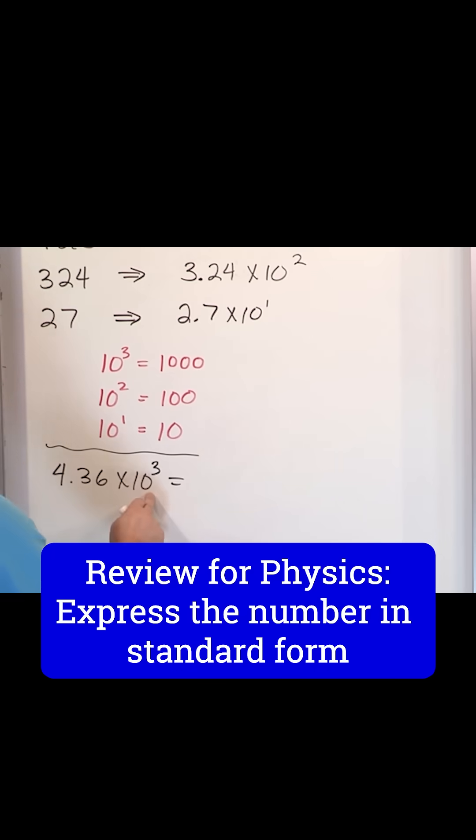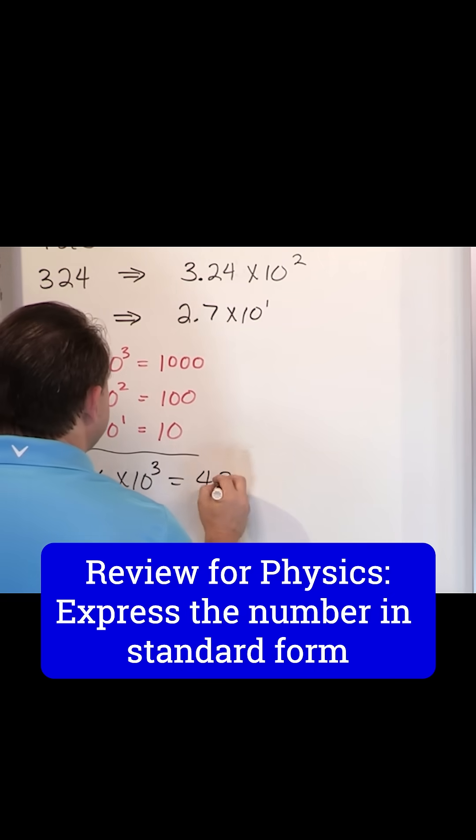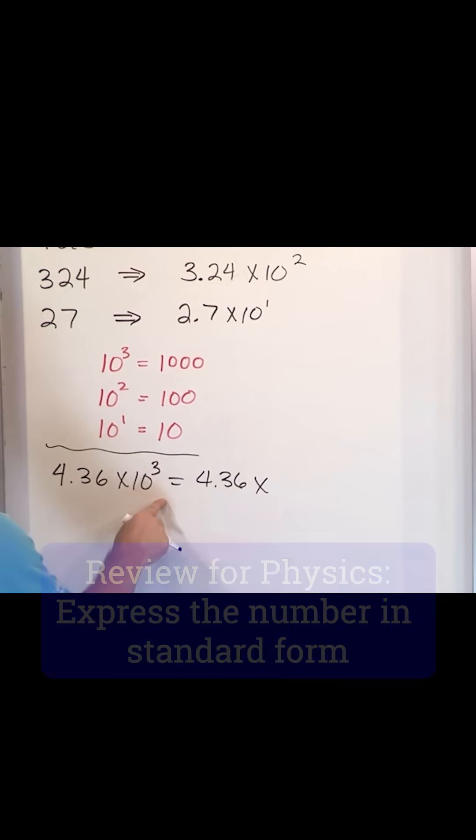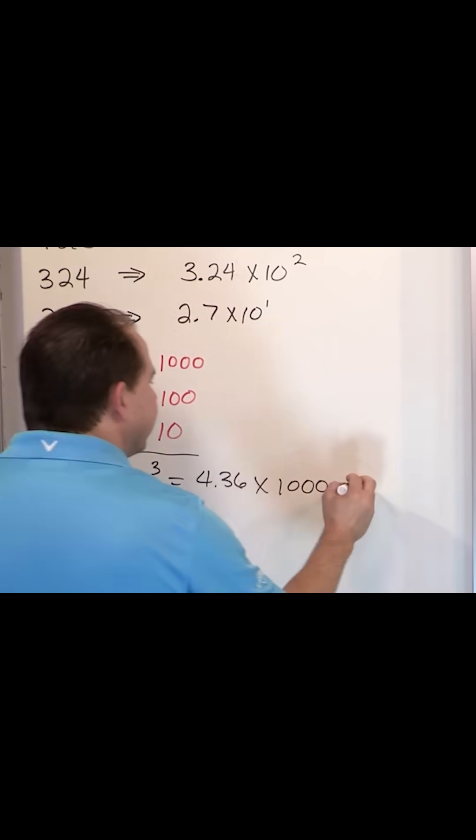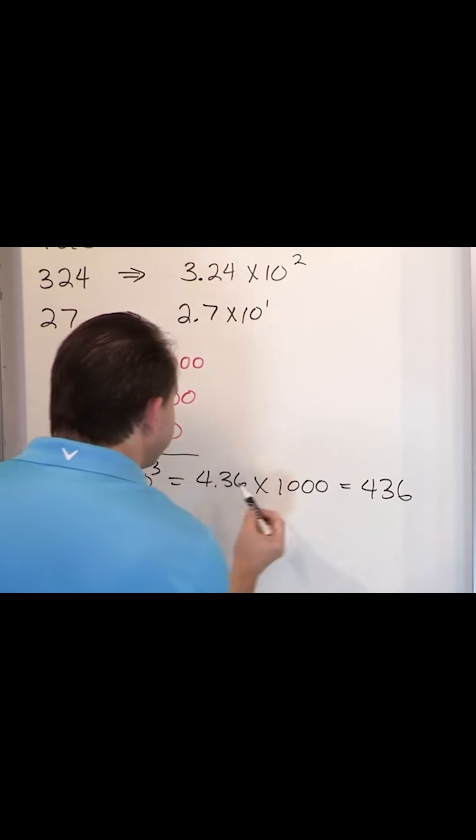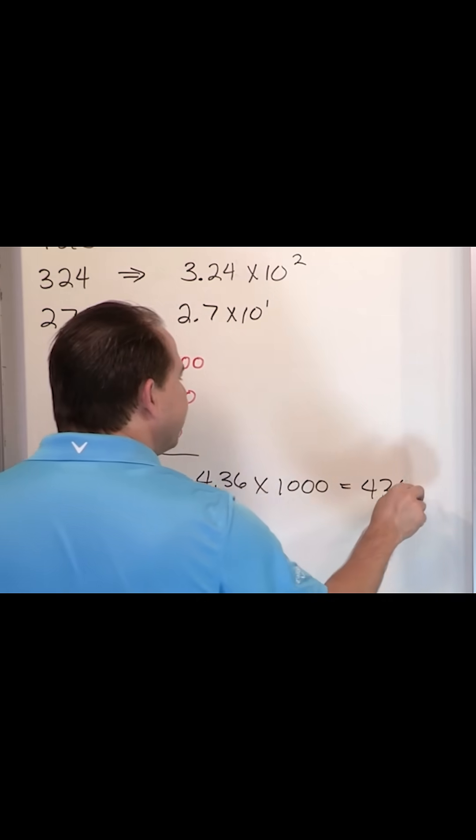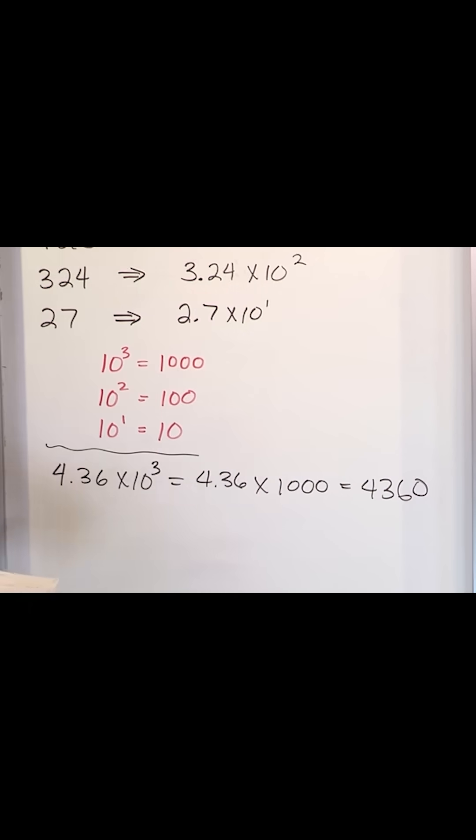How would you go backwards? If I gave you this in scientific notation, you would say, well, this is going to be 4.36 times 1,000, and I know when I multiply by 1,000, I move the decimal spot, so it's going to be 4, 3, 6. That means I move it one time, two times, I've got to go one more time, which means I need a zero. So it's 4,360.